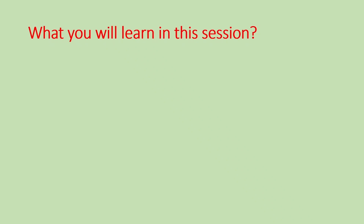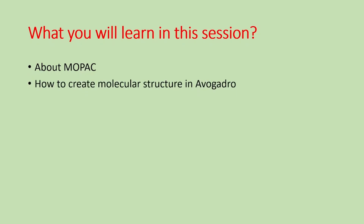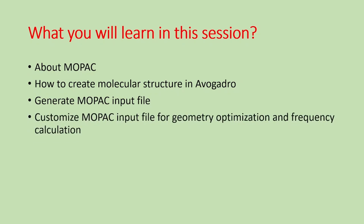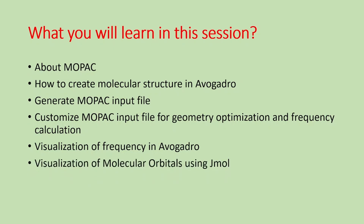What you will learn in this session: first we will discuss about MOPAC, that is the Molecular Orbital Package. Then we will discuss how to create molecular structure in Avogadro — for example, we will draw formic acid. Then we will generate a MOPAC input file using Avogadro software. After that, we will customize the MOPAC input file for geometry optimization as well as for frequency calculation by inserting some keywords. And in the last, we will visualize the frequency in Avogadro and molecular orbitals using Jmol.